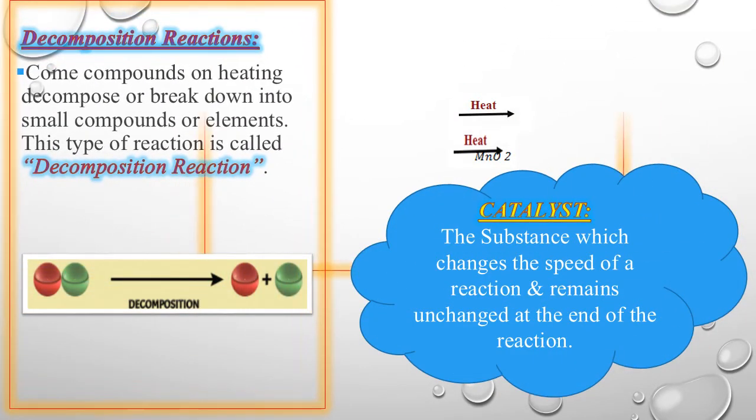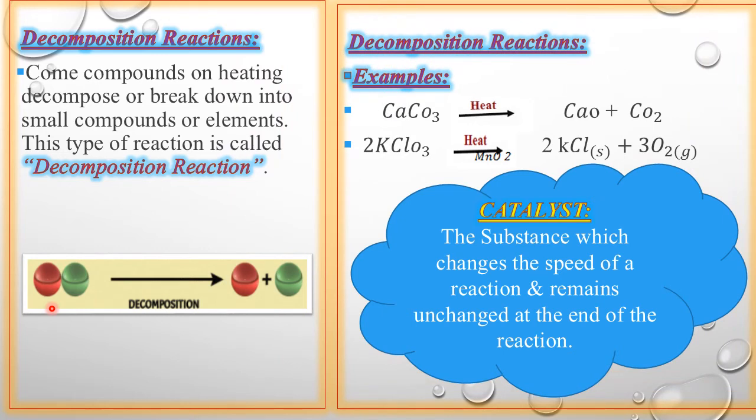Students, we will discuss the second type of chemical reaction. The second type of chemical reaction is decomposition reactions and decomposition reactions are totally opposite of addition reactions. Decompose means break. In decomposition reactions, our reactants break. We have one reactant and we get two products. Now, we need energy to break the reactant.